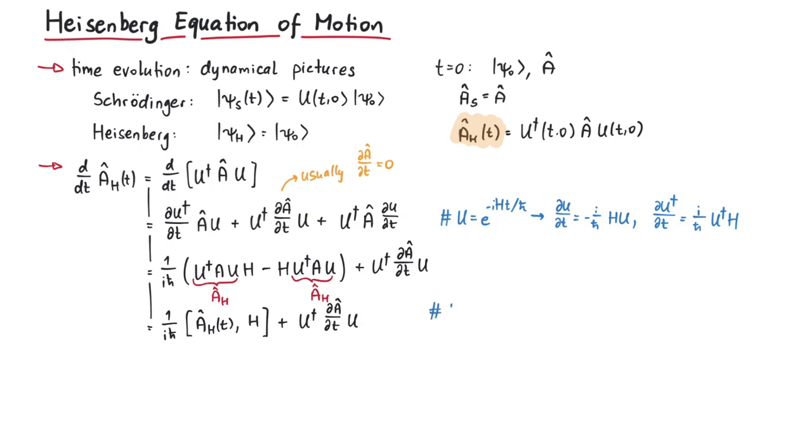Finally, some textbooks abbreviate the last term by the partial derivative d a h over dt, but this is rather a confusing way of writing this, so we won't use it here.